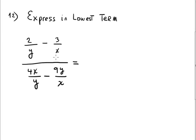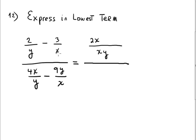This is a complex rational expression. The strategy is clear — let's work on the numerator part, the top part. The least common denominator is xy. xy divided by y is x, times 2x. xy divided by x is y, times negative 3 is negative 3y. Remember: divide the LCD by each denominator one by one and multiply by the corresponding numerator.